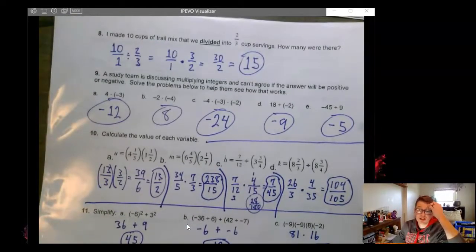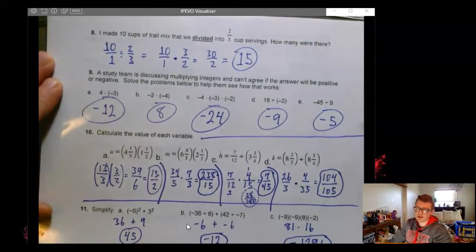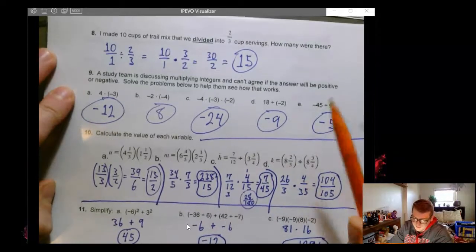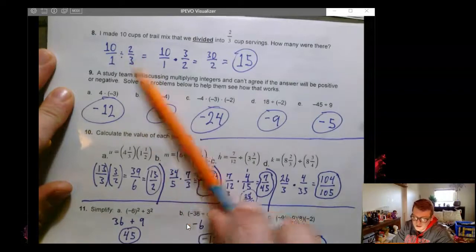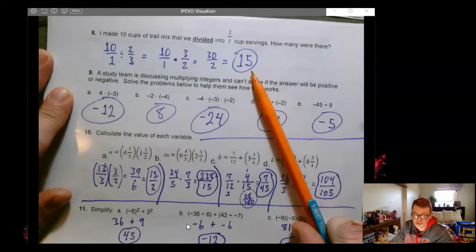Ten cups of trail mix. We divide into two thirds cup servings. Some of us got seven right and eight wrong or vice versa. We got seven wrong and eight right. Like it was kind of interesting to see how some of us tripped up with the thirds here. But again, this comes out evenly. Same process as number seven.